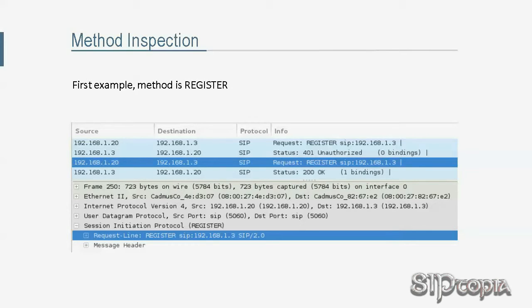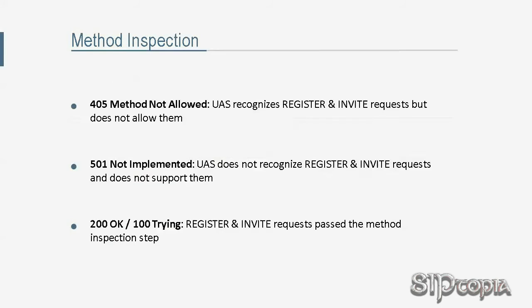After authentication is complete, the UAS moves on to method inspection. In our first example the method is REGISTER; in our second example the method is INVITE. Per RFC 3261, if the user-agent-server recognizes REGISTER and INVITE requests but does not allow them, Tarzan would receive a 405 Method Not Allowed response. This response would also include an Allow header field listing the methods permitted by the UAS. If the UAS doesn't recognize REGISTER and INVITE and therefore doesn't support them, Tarzan would receive a 501 Not Implemented response.